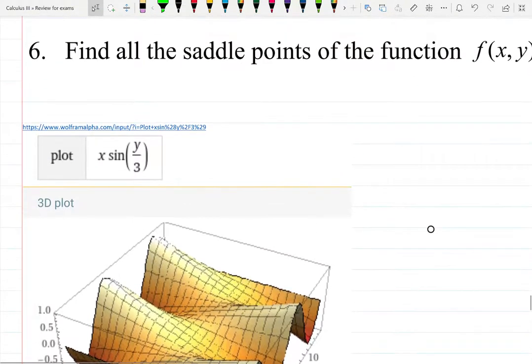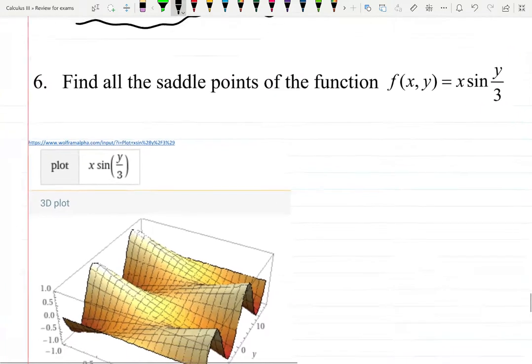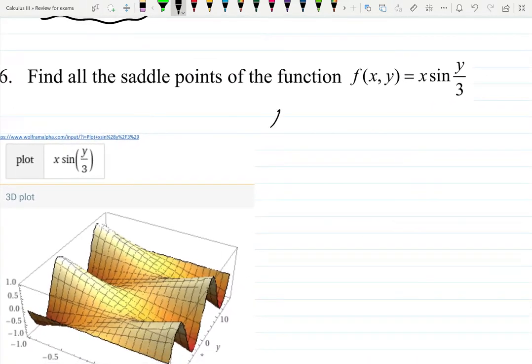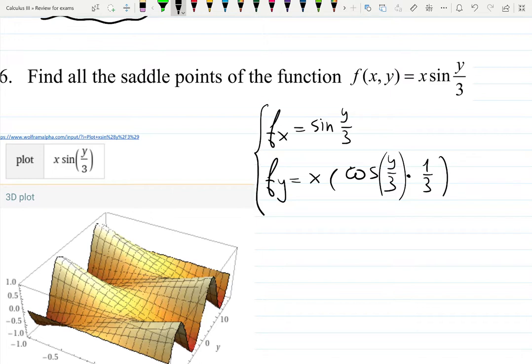To do so, as always, start with finding partial derivatives. The partial derivative with respect to x is sin(y/3). The partial derivative with respect to y will be - x stays, let me do it slowly for you - derivative of sine is cosine of y/3 times the derivative of the function inside which is y/3, giving you 1/3.